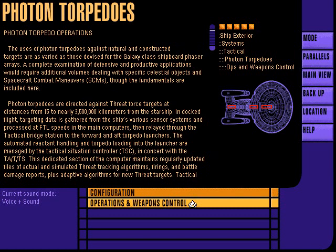Photon torpedoes are directed against threat force targets at distances from 15 to nearly 3,500,000 kilometers. Targeting is directed by the tactical officer following command authorization. The computer maintains regularly updated files of actual and simulated threat tracking algorithms, including adaptive algorithms for new threat targets.